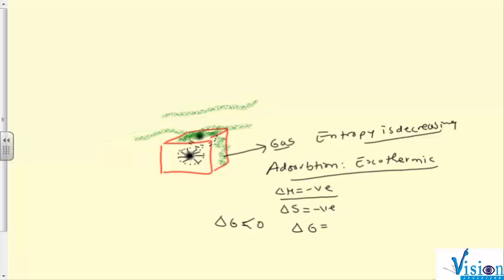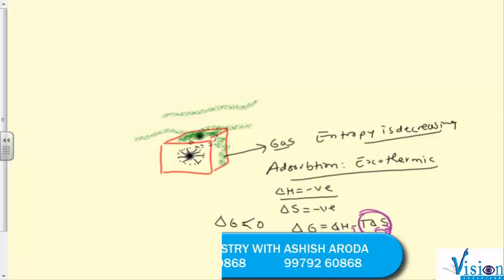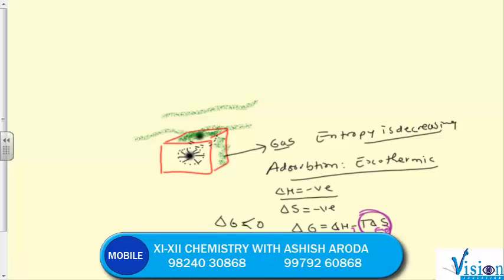We know the relationship: delta G equals delta H minus T delta S. Here, delta H is negative and delta S is also negative. Since delta S is negative, minus T delta S becomes positive. So delta H must be sufficiently negative — more negative than the value of T delta S — so that delta G becomes less than zero. Then and only then will this phenomenon occur.